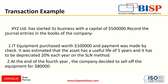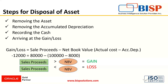Disposal is the removal of the asset from the accounting books when the company doesn't want to keep the asset in the business. The steps for disposal of an asset are: first, removing the asset from the books; second, removing the accumulated depreciation; then, if the asset is sold off, either it is sold, written off, or scrapped from the records. If it is sold off, there would be cash transactions, so its cash recording would take place. Lastly, when the sale has been made, there must be some gain or loss.